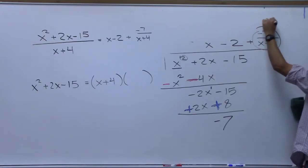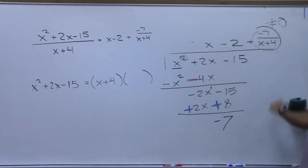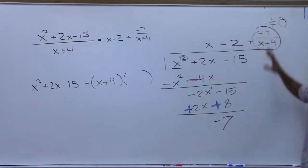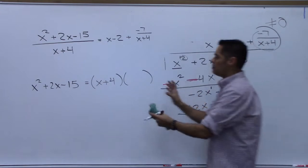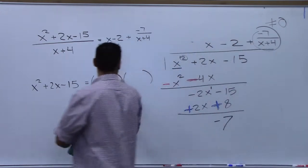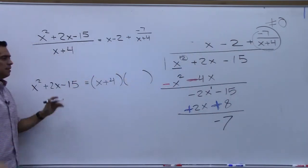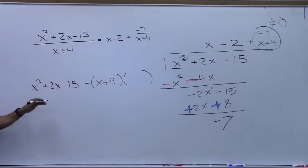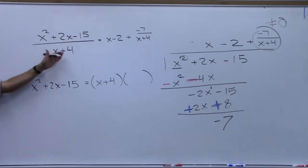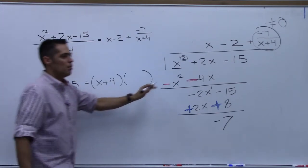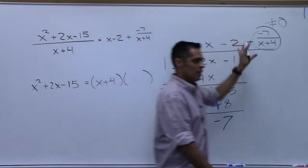This is not 0, right? That's not 0. We need this to be 0 to say that x plus 4 times something would be this original thing. So this would be one of the guesses that we tried that wouldn't work. What we're hoping for is a remainder of 0 out here.